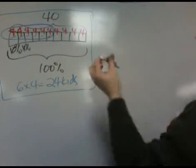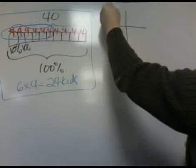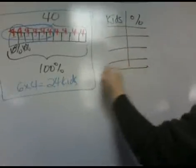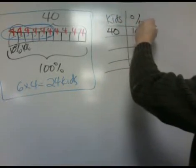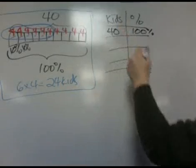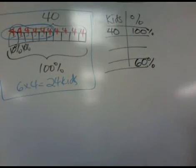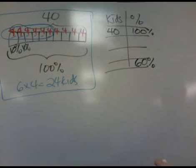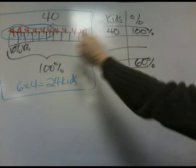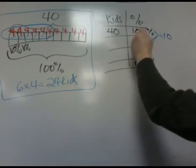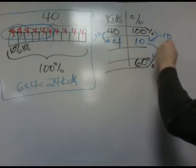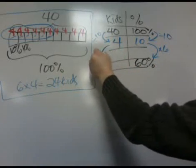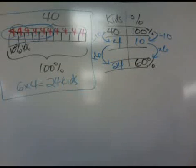Another way is using a ratio table. We set up columns for kids and percents. We know there are 40 kids in the bus, and that's 100%. We're trying to figure out how many kids equals 60%. The easiest way is to divide by 10 to get 10%, which means dividing 40 by 10 to get 4. Then 10 times 6 gives us 60%, so 4 times 6 gives us 24 kids.